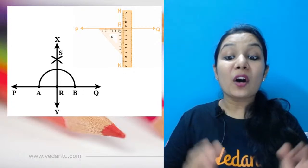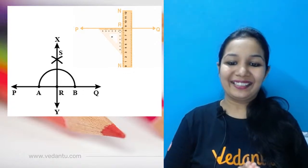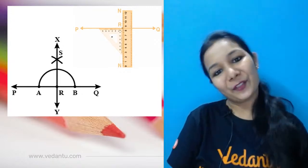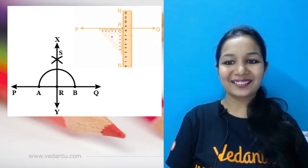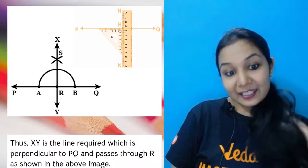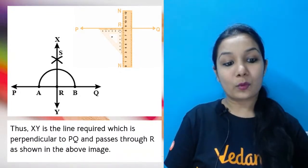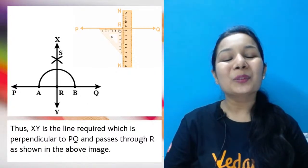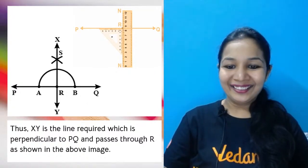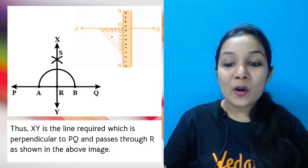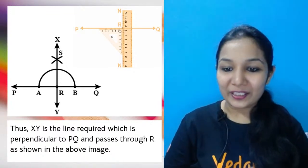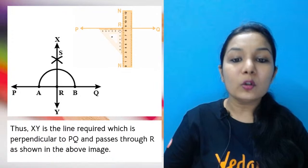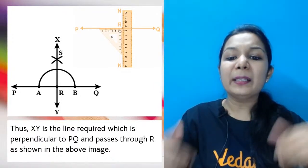Now take your ruler and pencil, join RS — and what have we drawn? This is the perpendicular line, meaning 90 degrees. RS is the line perpendicular to PQ passing through point R. So XY is the required line perpendicular to PQ passing through the point R. You can take any other names if they don't tell us the names.